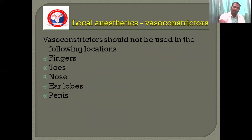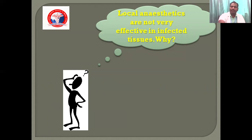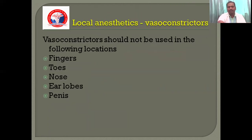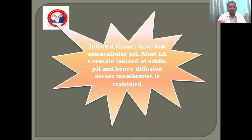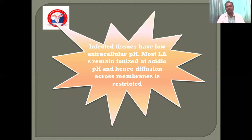Local anaesthetics are not very effective in infected tissues. Because infected tissue is not taken up properly, the protection cannot be adequate. The other reason is that infected tissues have a low extracellular pH. Most local anaesthetics remain ionized at acidic pH, and hence diffusion across the membrane is restricted. That is why local anaesthetics are not effective in infected tissue.